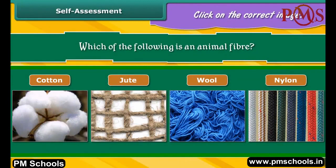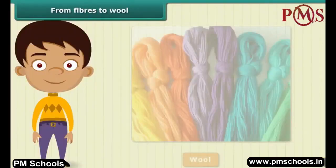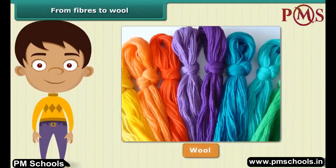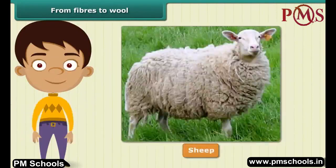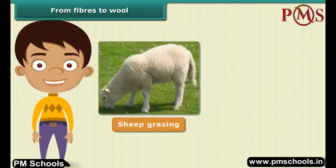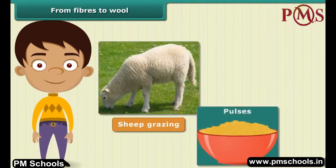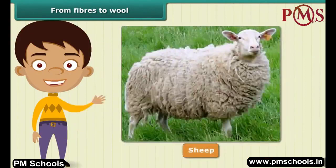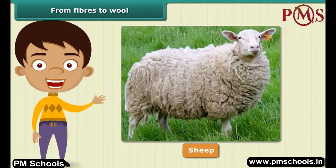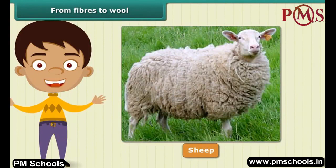For wool to be of good quality, sheep need to be fed a nutritious diet. Apart from what they get from grazing, they are fed a mixture of pulses, corn, and jowar. The well-fed sheep develop a thick growth of hair, known as the fleece of the sheep, which provides us wool.